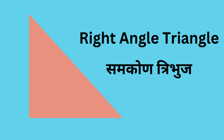This is a right angle triangle. One angle is always 90 degrees, or a right angle. The side opposite the angle of 90 degrees is the hypotenuse.